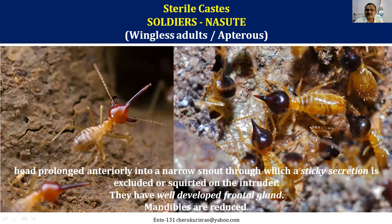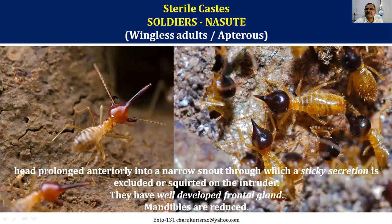Wingless workers are very soft, don't have well-developed eyes, and are very busy doing all colony work. Soldiers are of two kinds — mandibulate soldiers with well-developed mandibles and a very large, highly sclerotized head, and nasute soldiers whose head is developed into a long snout-like structure that secretes sticky materials. The nasute soldiers also have a well-developed fontanelle used for secreting poisonous material. Their mandibles are reduced.